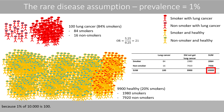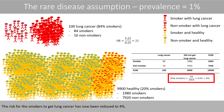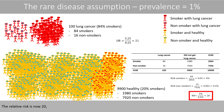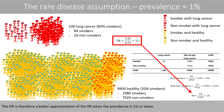Because 1% of 10,000 is 100, the risk for the smokers to get lung cancer has now been reduced to 4%, and the risk for the non-smokers has been reduced to 0.2%. The relative risk is now 20, which is very close to the odds ratio. The odds ratio is therefore a better approximation of the relative risk when the prevalence is 1% or lower.